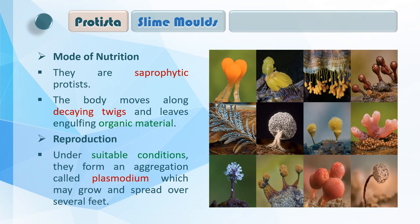Slime mold saprophytic protistan है। Saprophytic उसको कहते हैं जो decaying materials पे survive करते हैं, जैसे fungus करती है। The body moves along decaying twigs and leaves, engulfing organic materials। जो भी decaying leaves और organic matter होता है, उनसे यह अपनी life आगे बढ़ाती है। इसीलिए उसको saprophytic कहते हैं।